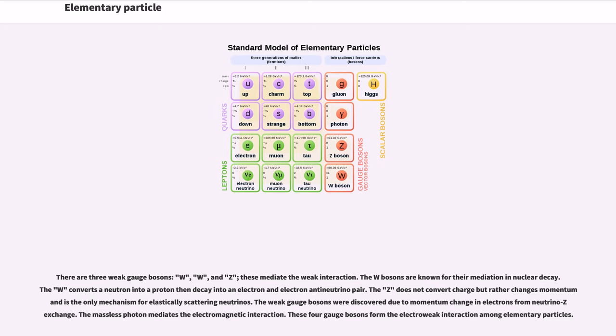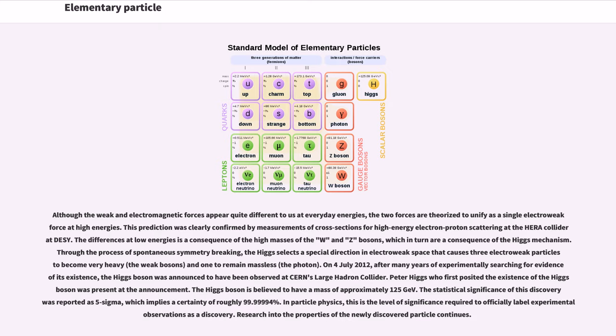The massless photon mediates the electromagnetic interaction. These 4 gauge bosons form the electroweak interaction among elementary particles. Although the weak and electromagnetic forces appear quite different to us at everyday energies, the two forces are theorized to unify as a single electroweak force at high energies. This prediction was clearly confirmed by measurements of cross-sections for high-energy electron-proton scattering at the HERA collider at DESY.